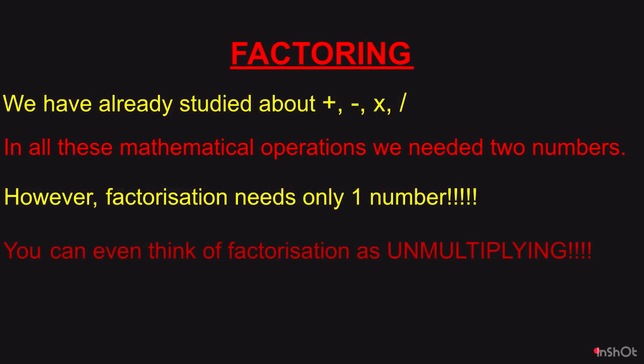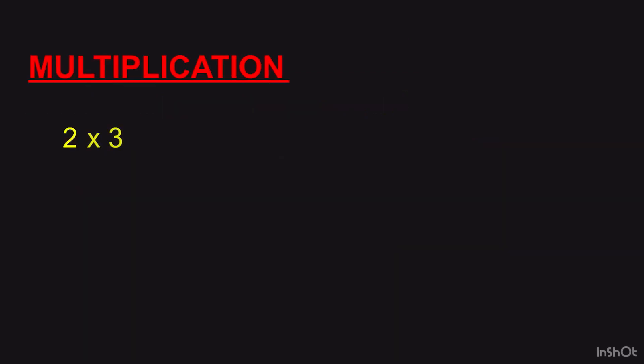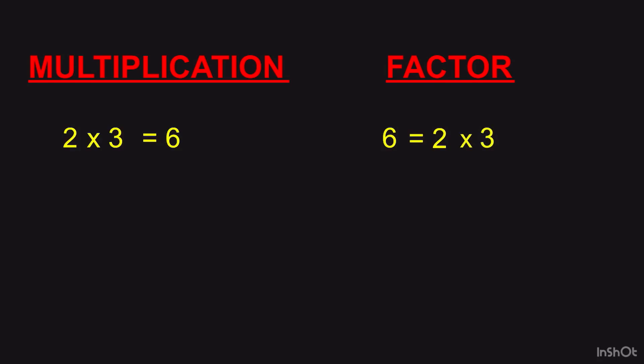You can even think of factorization as unmultiplying. In multiplication, if 2 and 3 were given, we could multiply them and get the answer 6. However, with factors we would be given one number, 6, and we have to find out how to write it in the form of multiplication. 6 can be written as 2 into 3, so 2 and 3 are factors of 6.